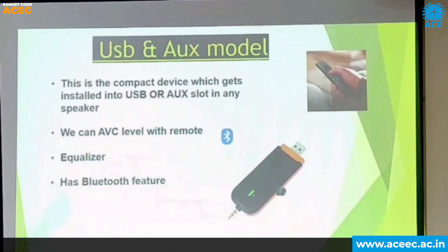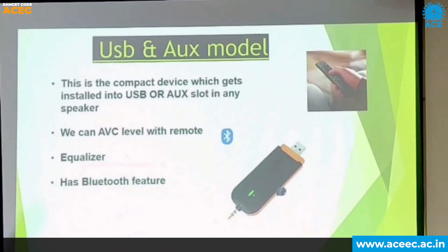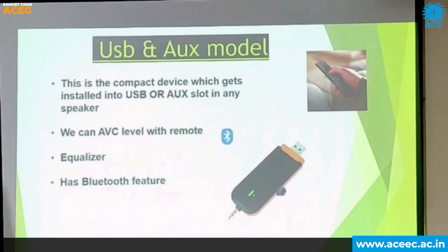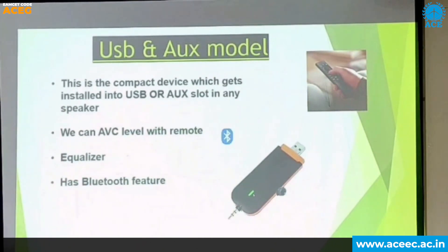In this model, as you can see, there is a USB connector on one side and an AUX cable on the other. This directly plugs into your home theater so that the AVC feature can be attached to it. It also works with Bluetooth, so you can connect directly. It functions just like an adapter.